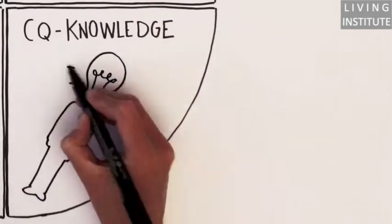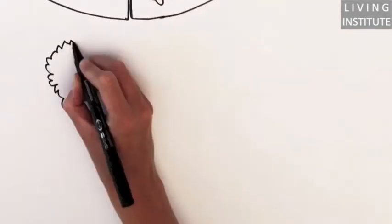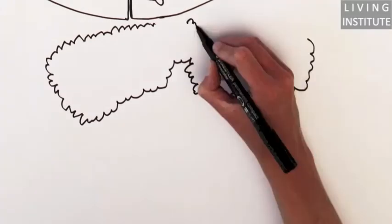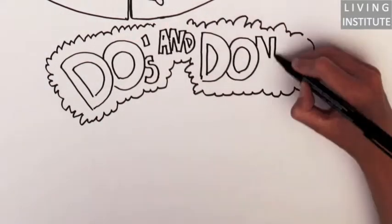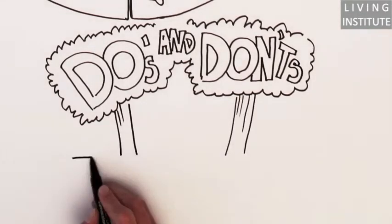The next part of the CQ wheel is CQ knowledge. This is the hard part of the wheel, because it involves learning not only the do's and don'ts of foreign cultures, but also the deeper values and ideas that distinguish societies, including your own.